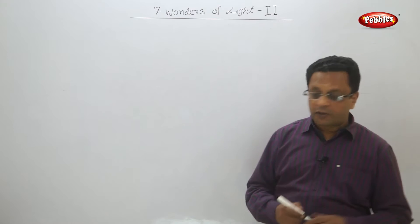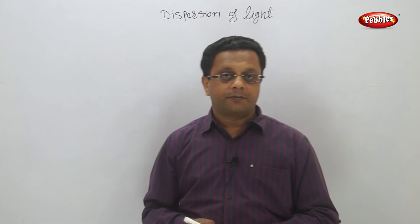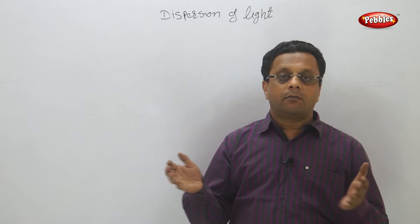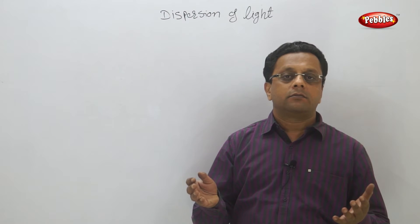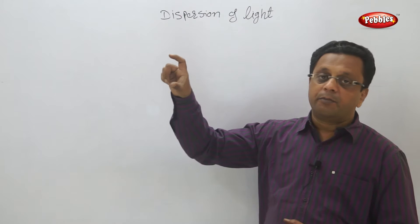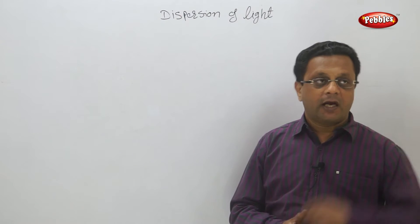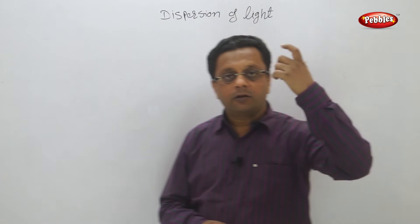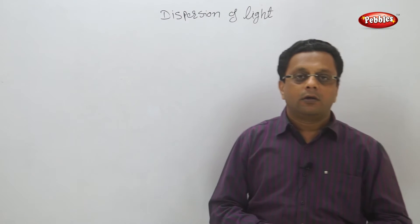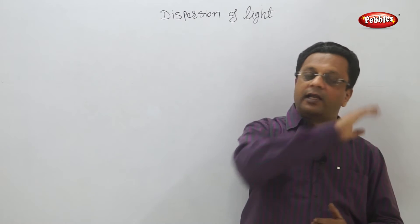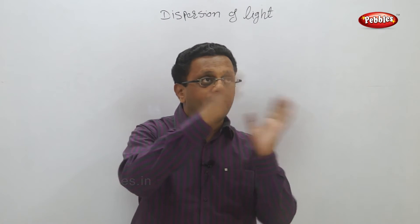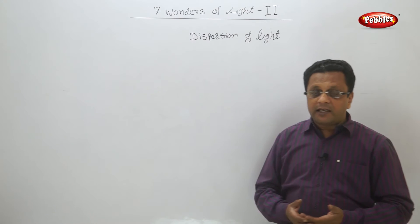Let us learn about dispersion of light. Consider a small experiment: suppose there is one big glass pot with water. You insert a mirror in the water and from a long distance you send a ray of light through a torch, some other source, or sunlight. The mirror will reflect the light, and while reflecting, if you take that reflection on a wall, you will see different colors — a color band. This is called dispersion of light.